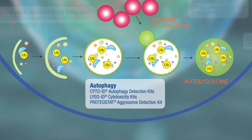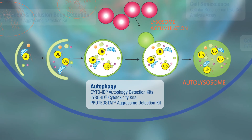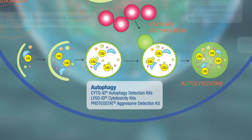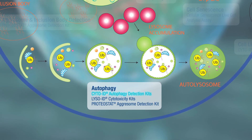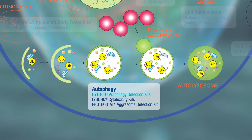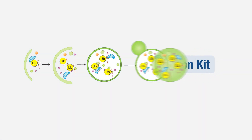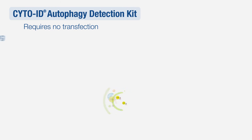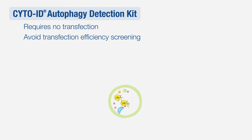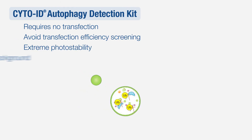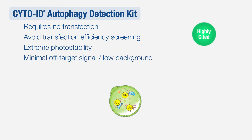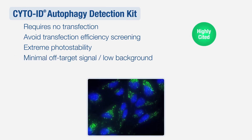Enzo's kits offer novel fluorescent dyes for visualizing autophagy. The CytoID autophagy detection kits are some of the most unique products on the market. These no-transfection quantitative assays for monitoring autophagy in live cells are composed of an extremely photostable proprietary dye that is selective for autophagic vesicles. Unlike other dyes, they result in negligible staining of lysosomes and minimal background.